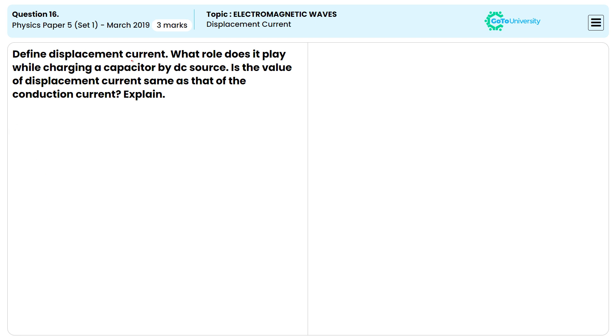Define displacement current. What role does it play while charging a capacitor by DC source? Is the value of displacement current same as that of the conduction current? Explain.